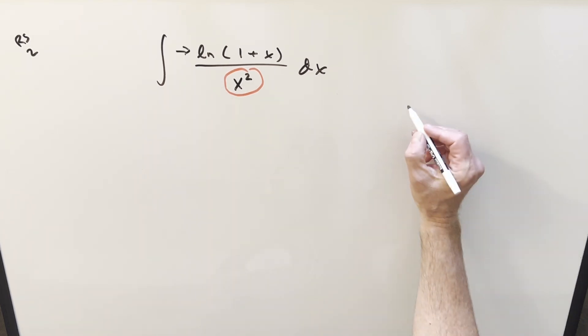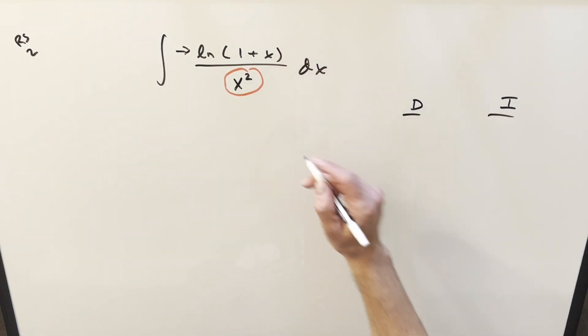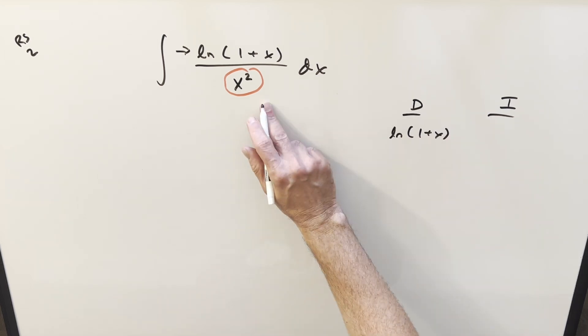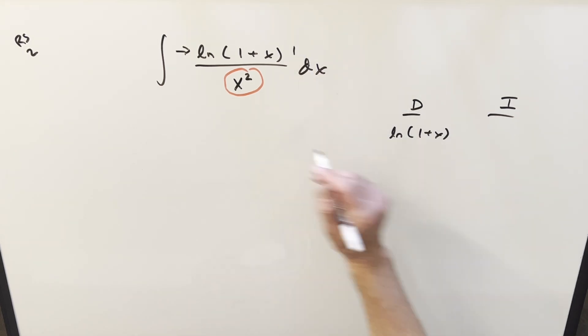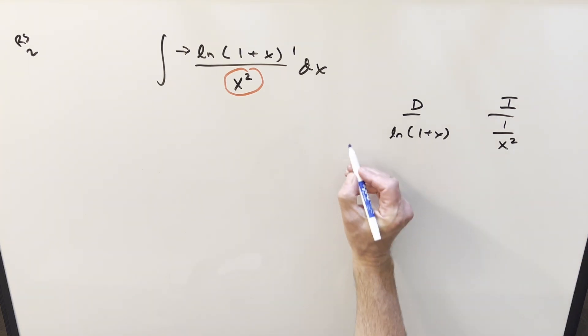So in order to do this, let's set up our DI table for tabular integration over here to the right. We'll differentiate the whole numerator, natural log one plus x, and then we'll integrate one over x squared. And then we're going to want alternating signs over here, so the first one's going to be positive, the next one's going to be negative.